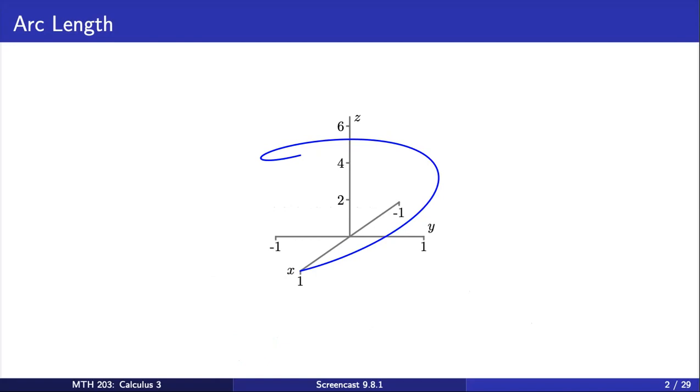Suppose we want to know the length of a curve over a given interval. We can use a familiar procedure, where we partition the interval into n equal subintervals. On each subinterval, we then approximate the length of the curve by the length of a line segment. Then, to approximate the length of the entire curve, we use the sum of the lengths of all the line segments.